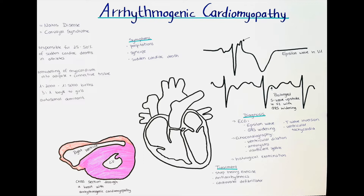Arrhythmogenic cardiomyopathy is a disease of the heart which is characterized by the progressive dystrophy and remodeling of the myocardium into adipose and connective tissue, which shows with life-threatening ventricular arrhythmias. The disease affects most often the right ventricle, but the left ventricle can be affected as well. It occurs in 1 out of 2,000 to 1 out of 5,000 births and is three times as common in boys than in girls.